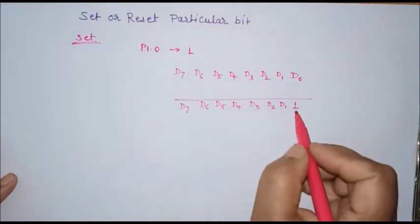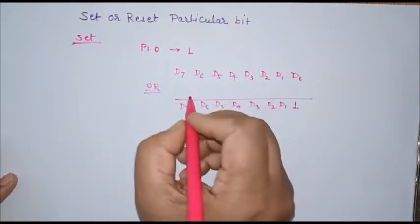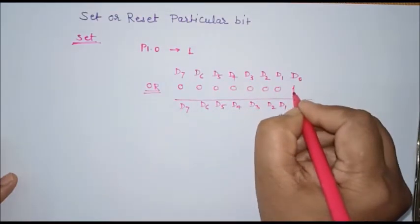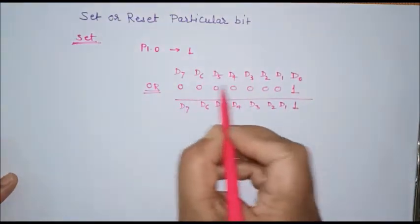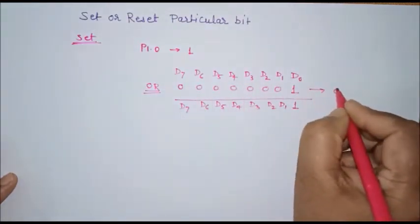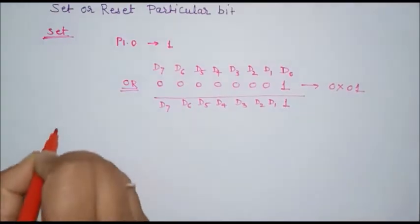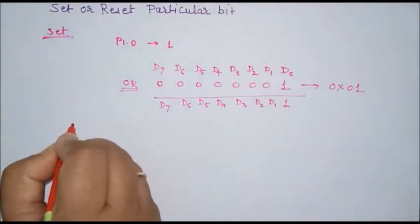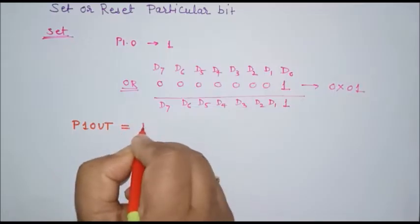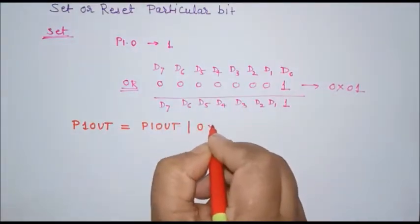To perform this type of operation, we have to perform an OR operation on the data. We have 00000000 and we want to set this bit, so we'll OR this bit to 1. If we perform an OR operation on this data with the value 0x01, the result will reflect the set bit. The instruction we use: p1out register should be equal to p1out OR with 0x01.